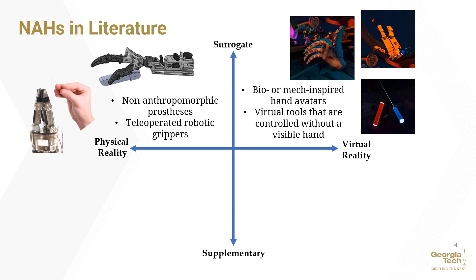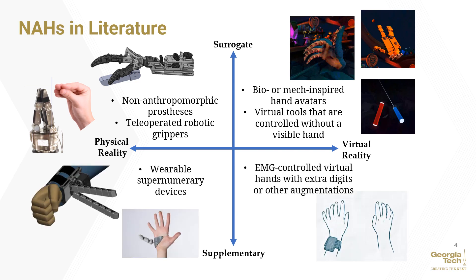We also found a distinction between NIHs used as proxies or surrogates for the user's hand, and NIHs that augment or supplement it. While surrogate NIHs are mapped to the user's primary hand function, supplementary NIHs must use control schemes that leave that primary hand function intact.